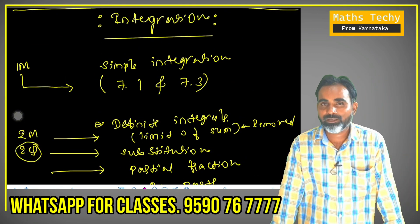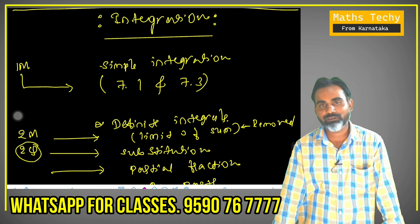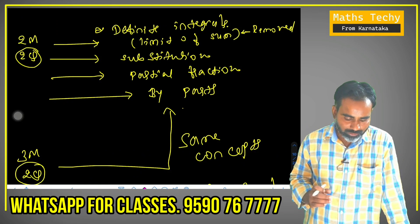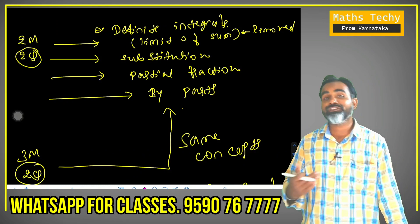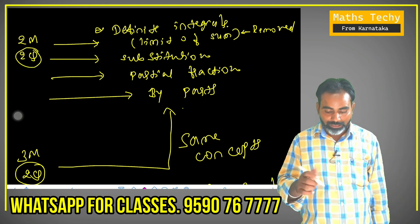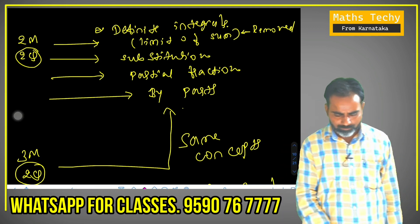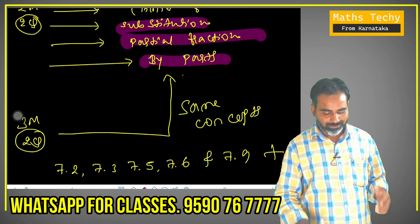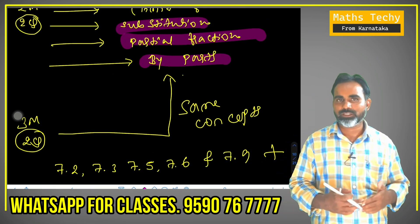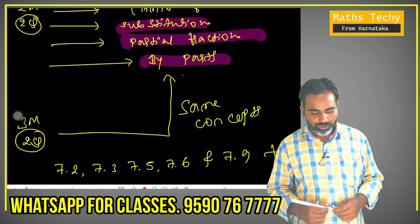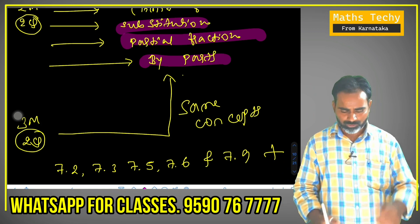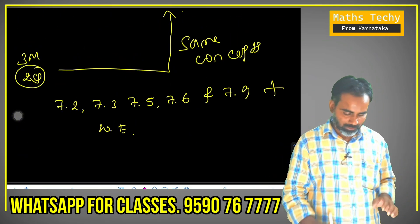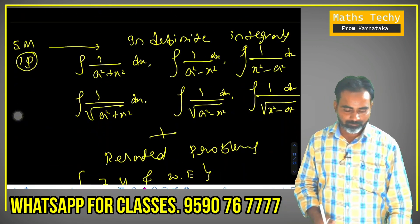This is the integration. In the integration, it is a very simple integration — perfect in 7.1 and 7.3 marks, a very rare technique. The 2 marks integration is definite integrals — the limit of sum is removed. There is a substitution method, partial fraction and by-parts — same concept of 2 marks. In the 3 marks it is the same concept, but the maximum is partial fraction and by-parts. We expect at the maximum the by-parts or partial fraction — no limit of sum. The remaining is against 7.2 and 7.3. The 5 marks we have in indefinite integrals.